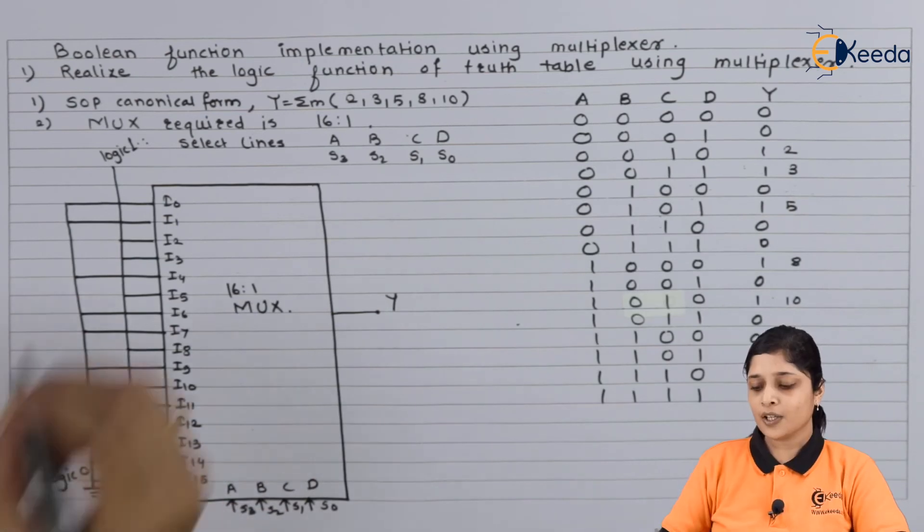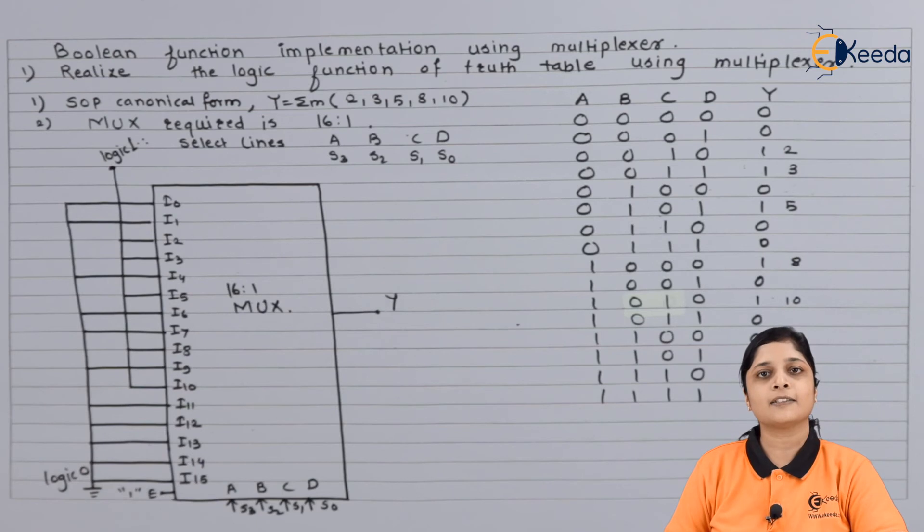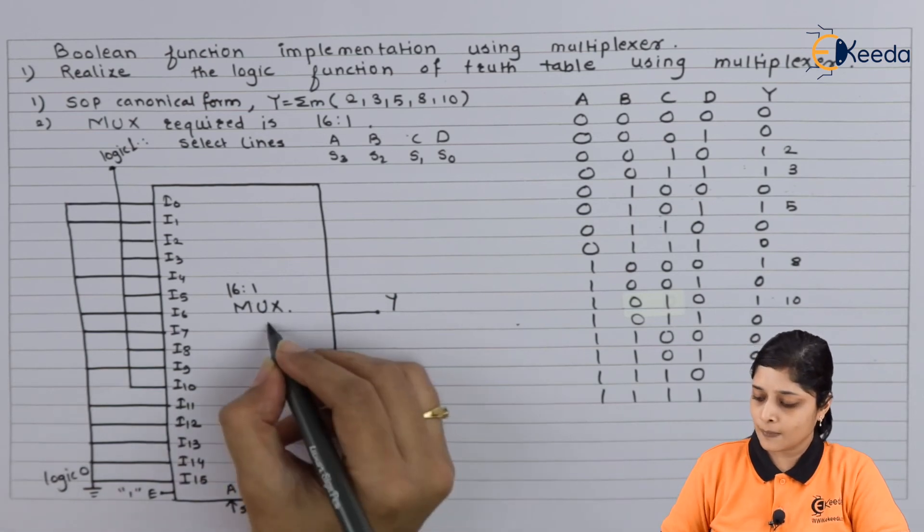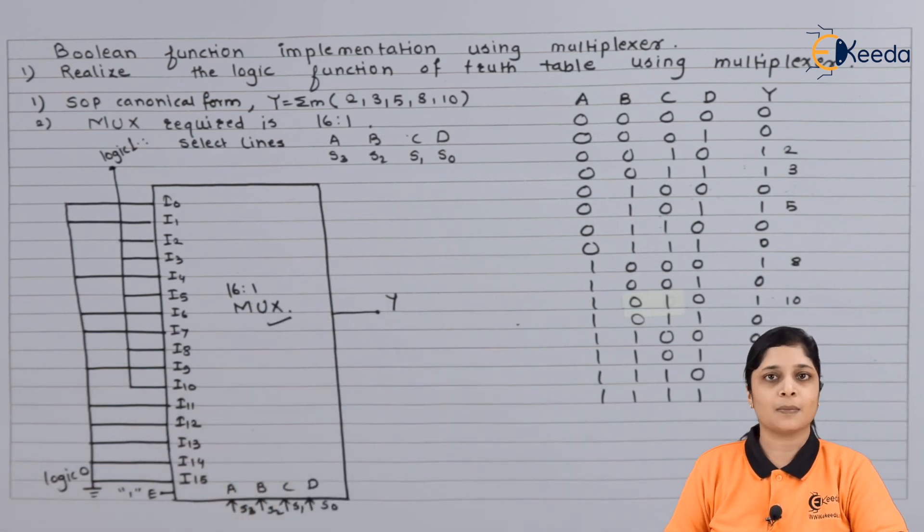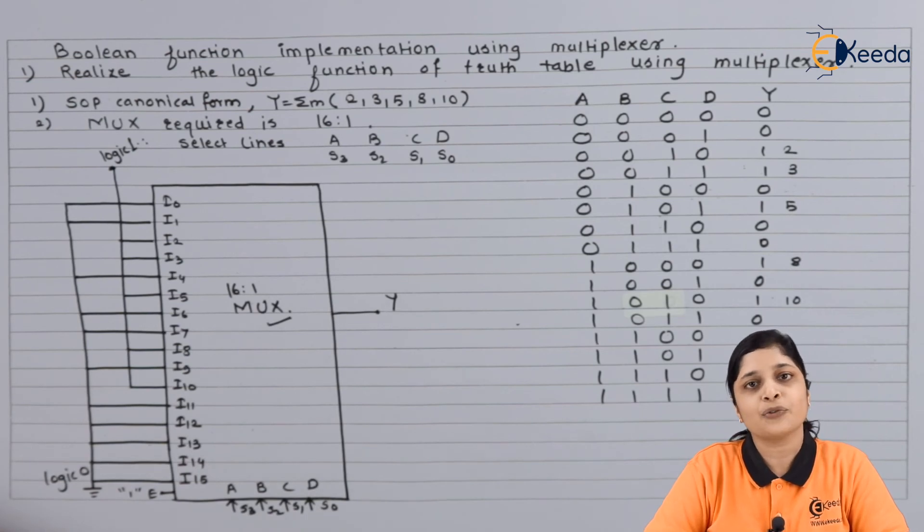In this way you have to realize the circuit of multiplexer using truth table. This is all about the implementation of 16 to 1 mux using truth table. Thank you for watching this video. Stay tuned with Ikida and subscribe to Ikida.